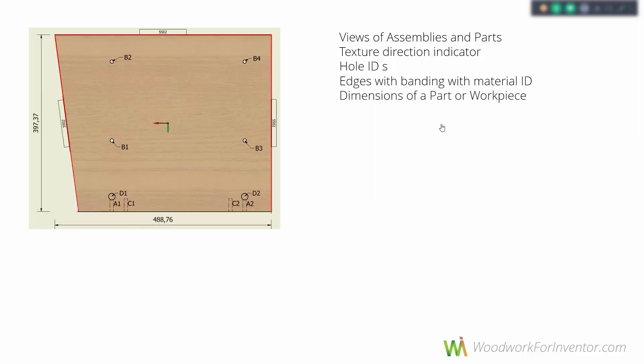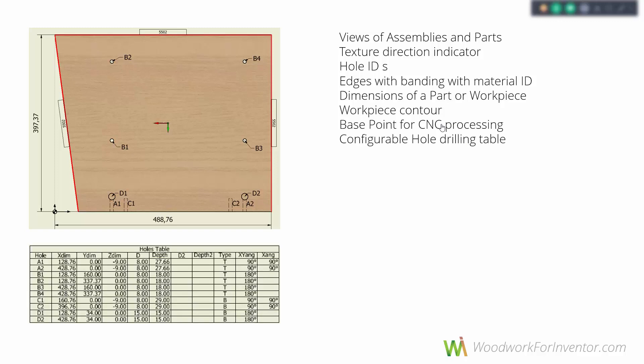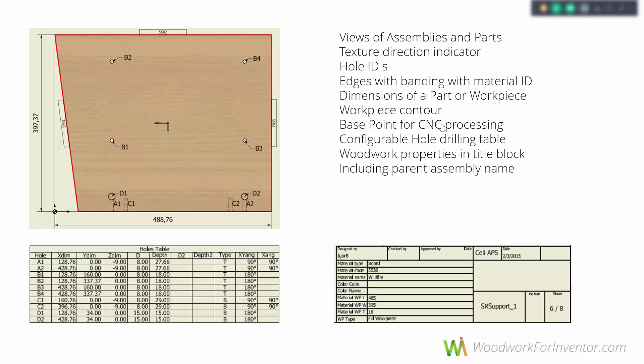Besides that, we have the dimensions of a part and workpiece shown on the drawing. We get the workpiece contour and base point for CNC processing if you have one. When we are doing drilling, sometimes we are forced to use manual input, and for that there is a hole table which contains all the coordinates of all the holes in a part — this reduces the time needed to enter drilling data into the machine. Moreover, in the title block we get all information about the workpiece: the name, the size, the type of material, and the parent assembly name.